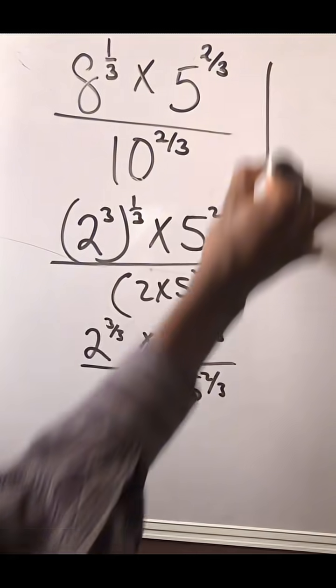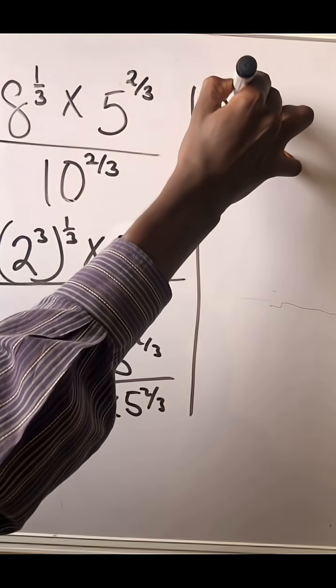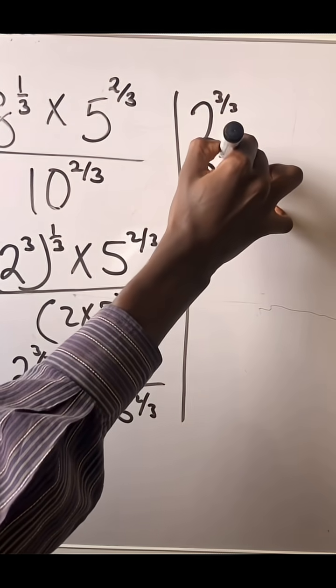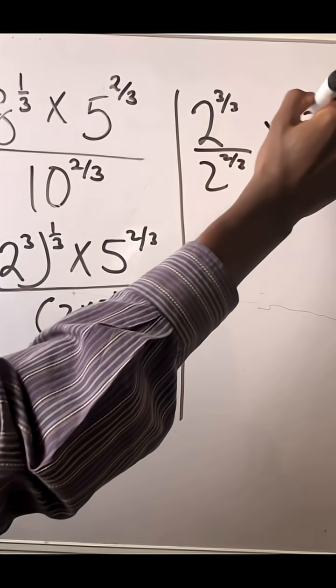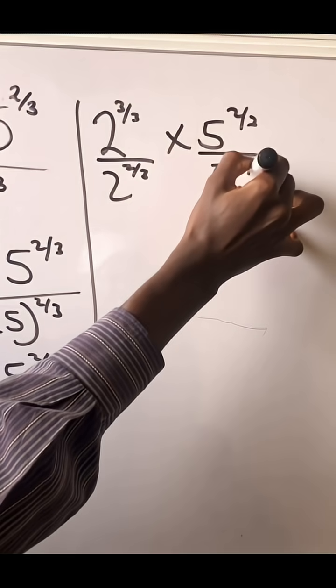Now listen up. Let's come over to this place. This divides this. I got 2 to the power of 3 over 3 divided by 2 to the power of 2 over 3, times 5 to the power of 2 over 3 divided by 5 to the power of 2 over 3.